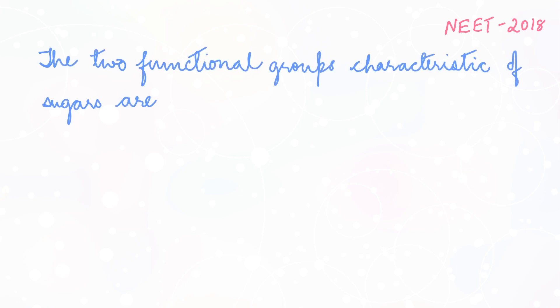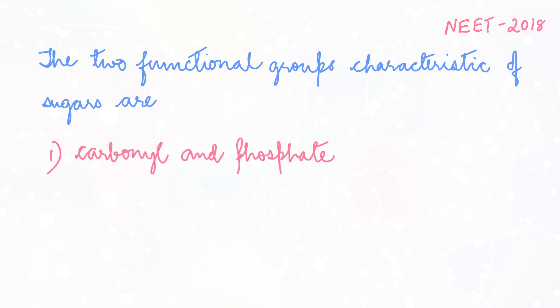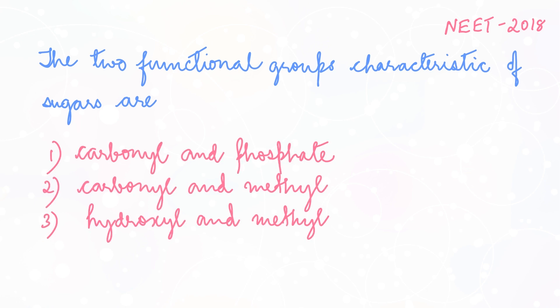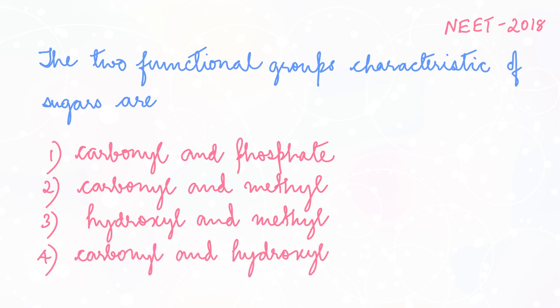The question is: the two functional groups characteristic of sugars are — carbonyl and phosphate, carbonyl and methyl, hydroxyl and methyl, or carbonyl and hydroxyl.